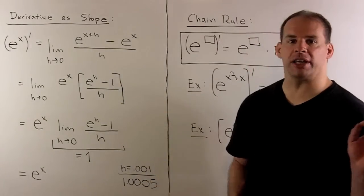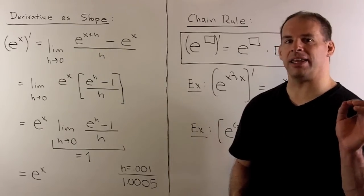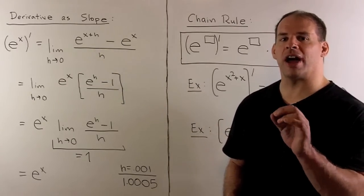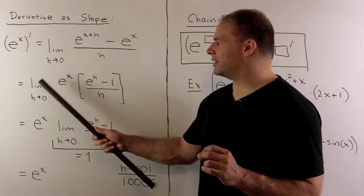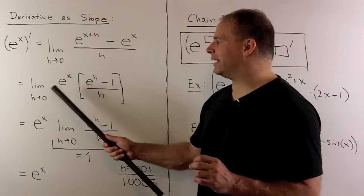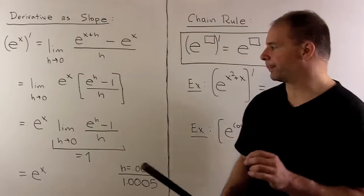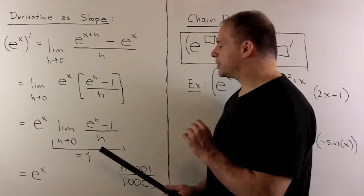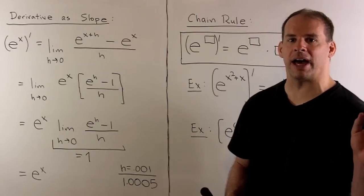First manipulation I can do, e to the x plus h is equal to e to the x times e to the h. So, we could factor out an e to the x. Now, our limit is in h, so I could pull the e to the x to the outside. As far as the limit's concerned, it's just a number. That puts the focus on limit as h goes to 0 of e to the h minus 1 divided by h.